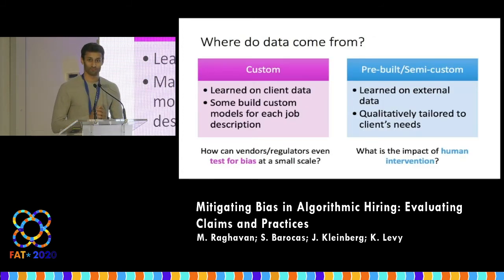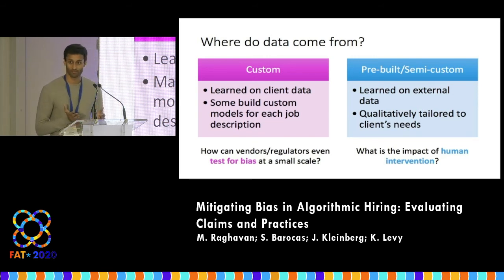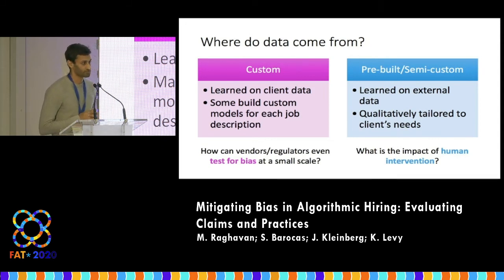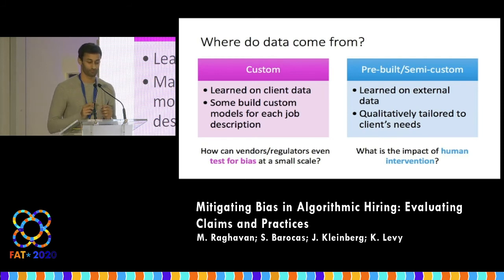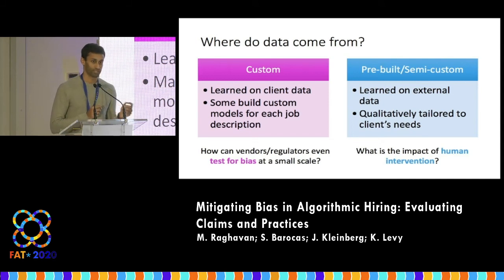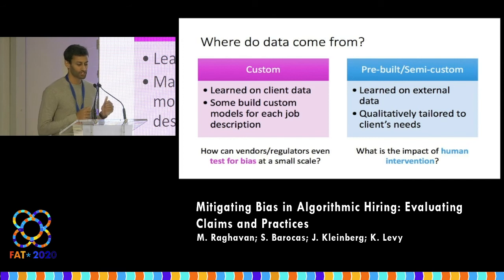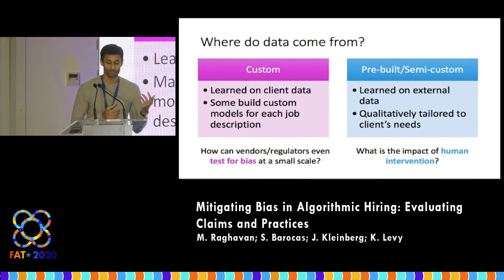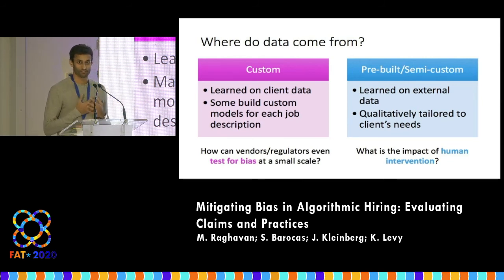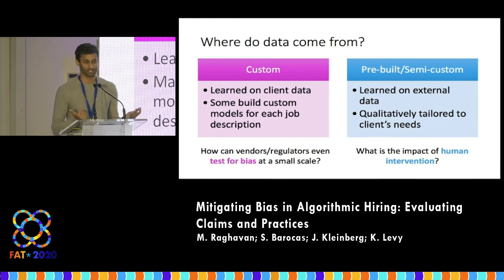The next thing I want to look at is where data actually comes from for these systems. The source of data is quite crucial to understanding how the system is going to behave. Some vendors build custom models — they take a game-based assessment, go to existing employees, have them take it, and link results to performance metrics. This can lead to quite small-scale models built at the level of individual jobs, making it unclear how we can test for discrimination at that level. On the other hand, you might have pre-built models where the vendor maintains their own data, builds a model, and does a little qualitative fitting based on customer needs.